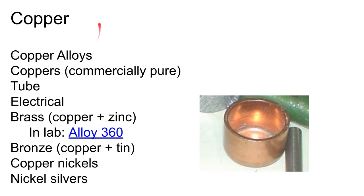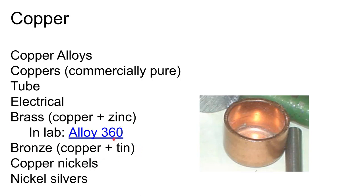Another common group is copper alloys. Commercially pure copper is used frequently — more so than commercially pure aluminum — in plumbing and electrical applications. Combine copper with zinc and you get brass; copper with tin gives bronze. For the test, remember: brass is copper-zinc, bronze is copper-tin. We're using alloy 360 brass in the lab.